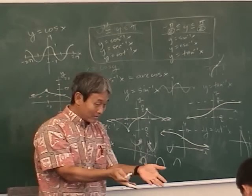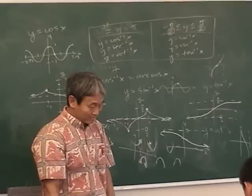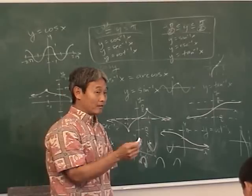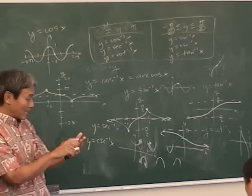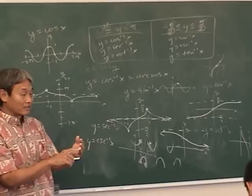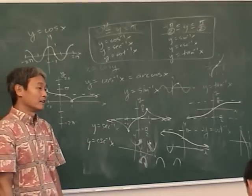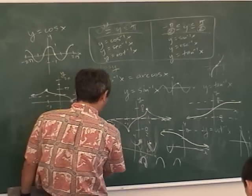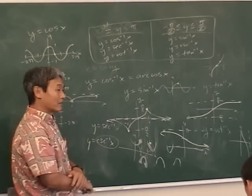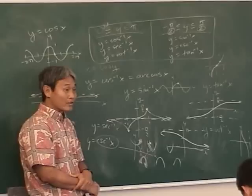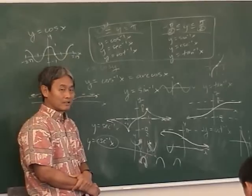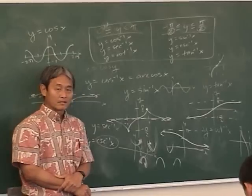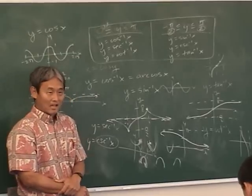Your homework tonight is numbers one and two — all you have to do is draw nine graphs and check them on your calculator. Be careful: on your calculator there's only cosine inverse, sine inverse, and tangent inverse. Do not do one over sine inverse — that is wrong. The negative one means the inverse, not the reciprocal.